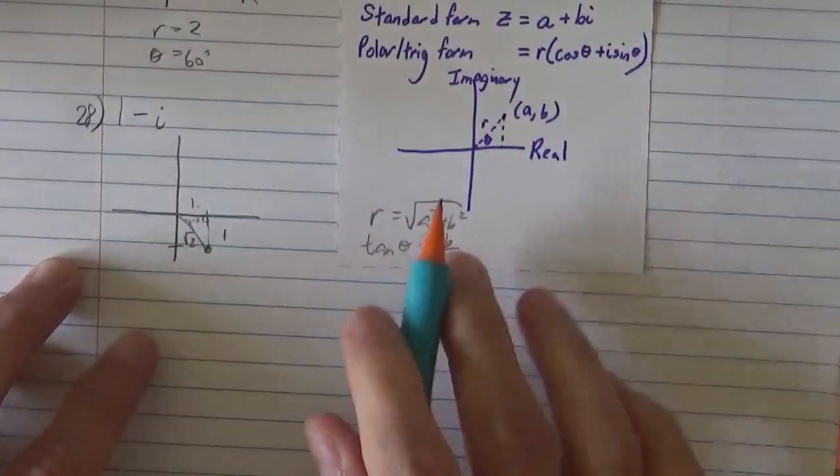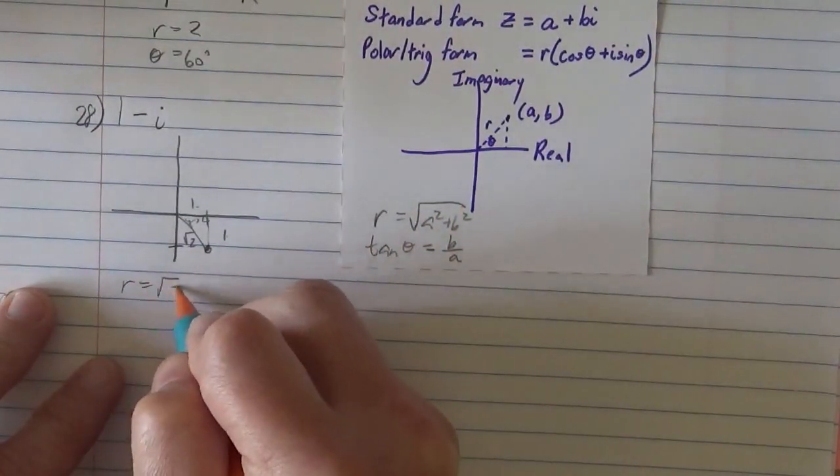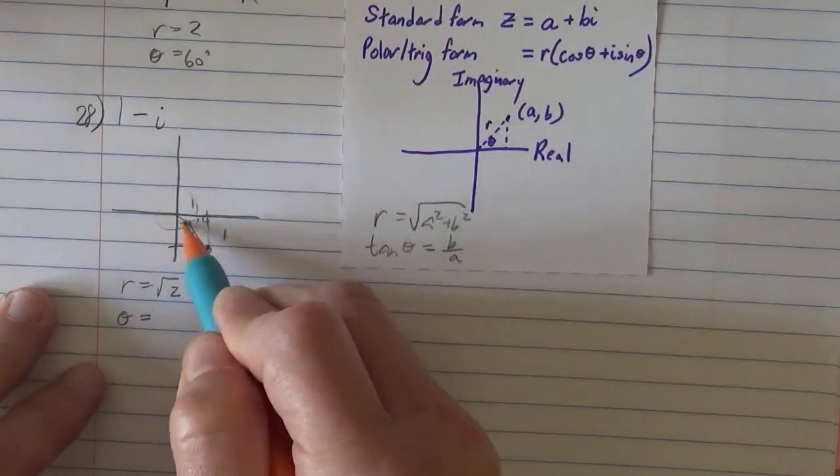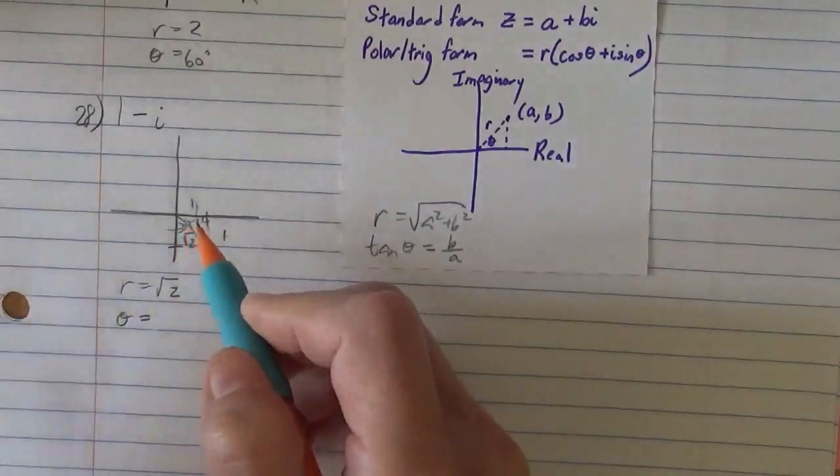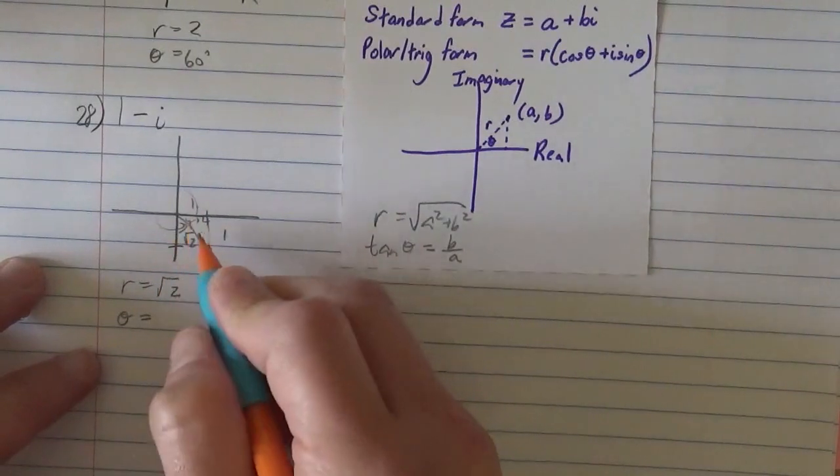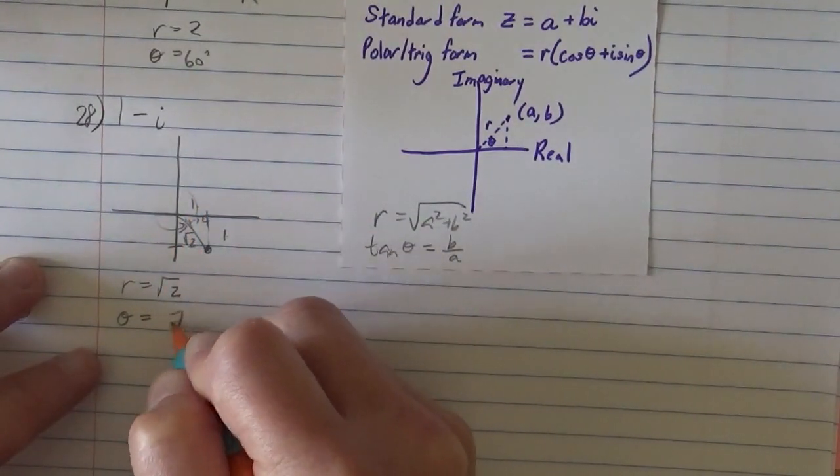And again, if you don't know it, you can use that. And then you can do, so the r is going to be root 2, and the theta is going to be, I could call it negative 45 degrees, or I can call it 315 degrees. The directions ask for between 0 and 2 pi. So I want to do the radian equivalent of 315 degrees. I want to do, what is that, 7 pi fourths.